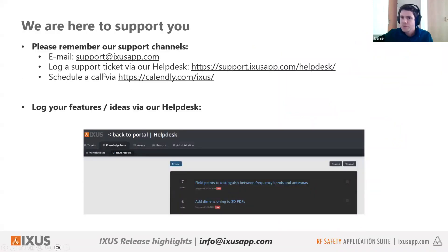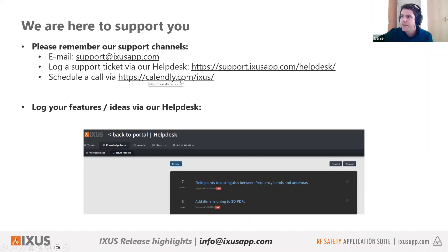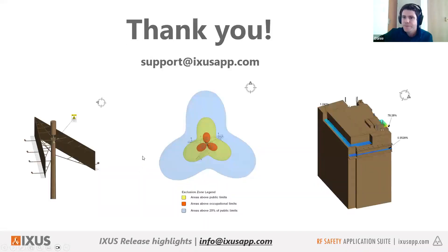Finally, a reminder about our support channels: you can send an email to support@xsup.com, or preferably log a ticket on the help desk which makes it easy to track and discuss. You can also log a support call at calendly.com/xs. Remember there is also a feature ideas section on the help desk knowledge base where you can log new feature requests. Thank you very much.